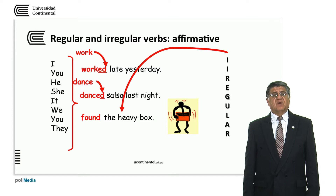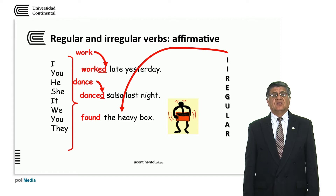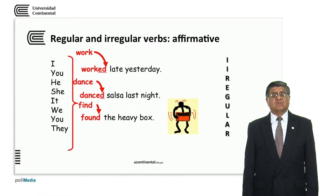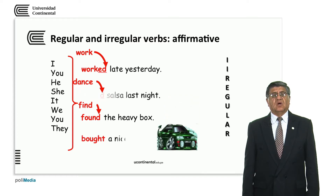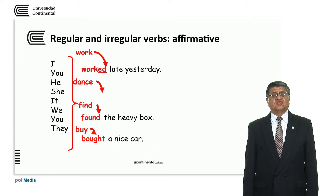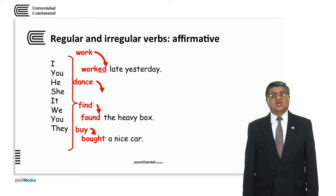We have some irregular verbs that change from the present to the past. 'Found' is the past form of 'find' — find changes a lot to make the past: found. We also have 'bought,' which is the past form of 'buy.' Buy changes to bought. So: I worked late yesterday, or they bought a nice car.